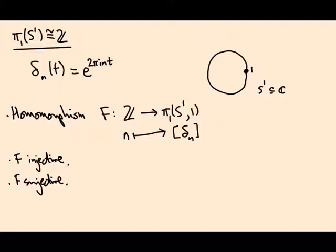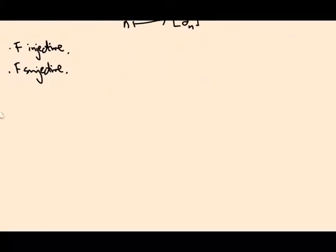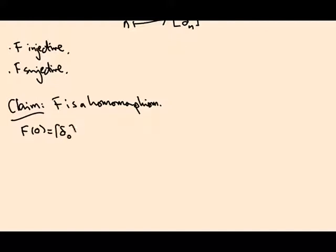So let's start by proving it's a homomorphism. The first thing to check is that the identity goes to the identity. The identity in the integers is 0, that goes to the homotopy class of delta 0, and delta 0 of t is e to the 0, which is 1. So this is the constant path, constant loop, which is exactly the identity in pi 1.